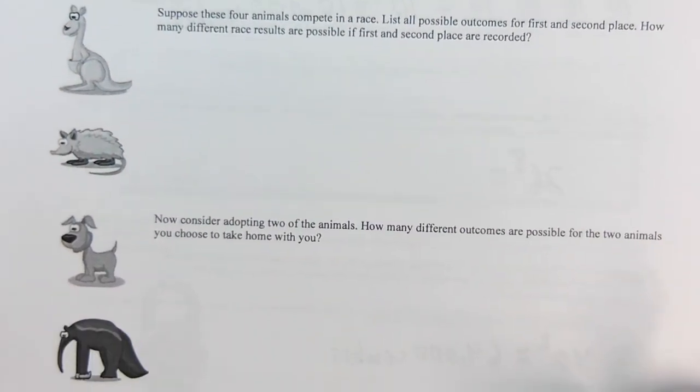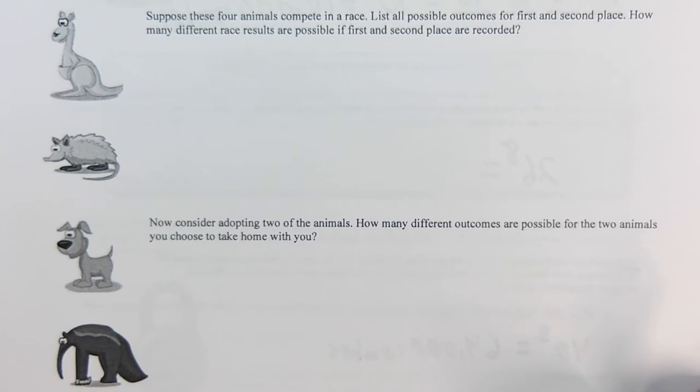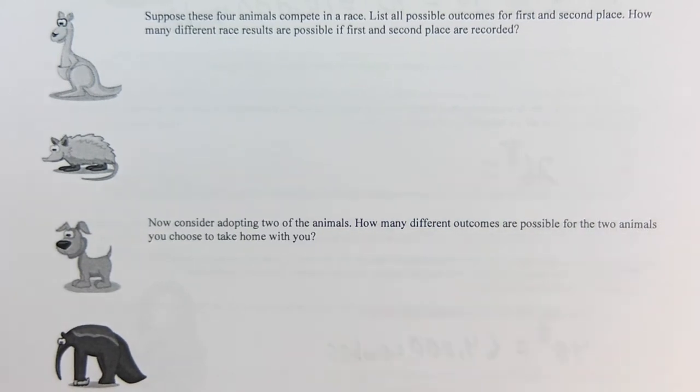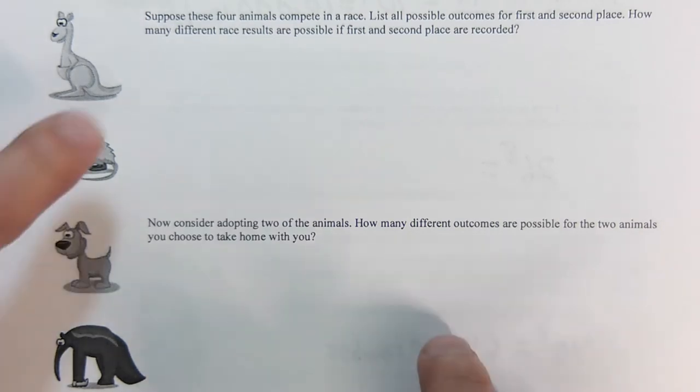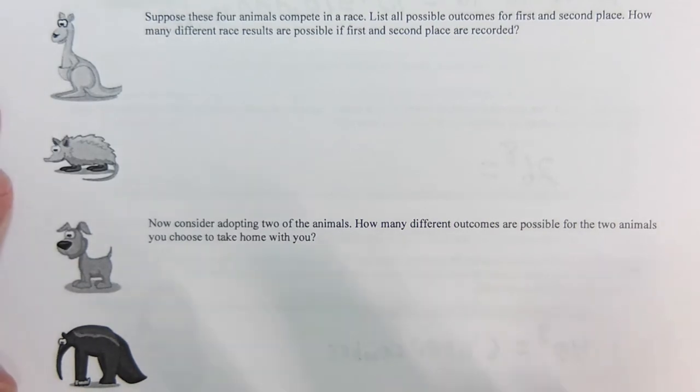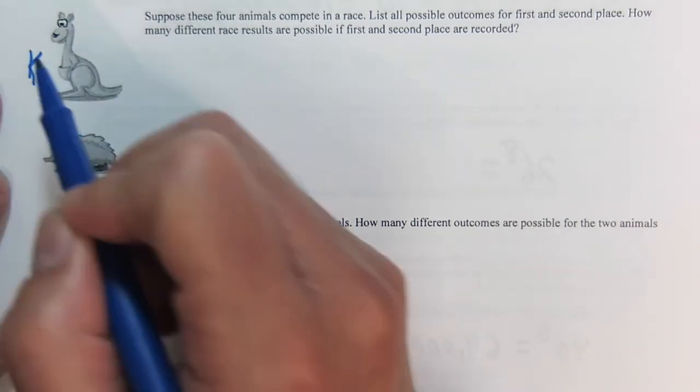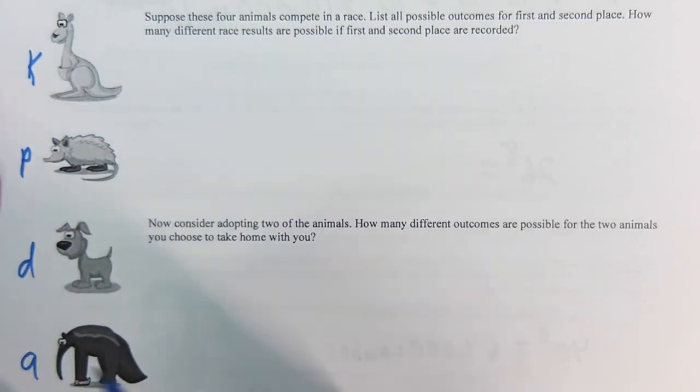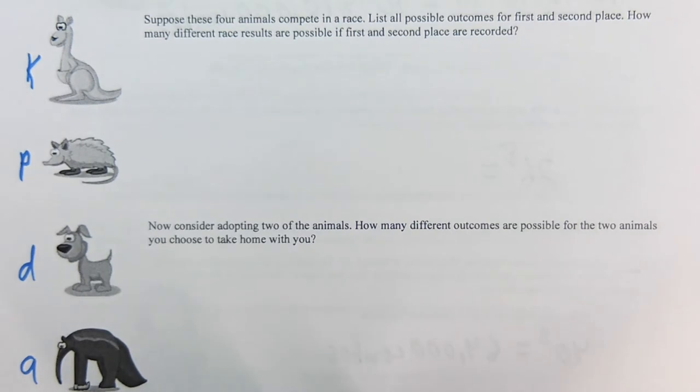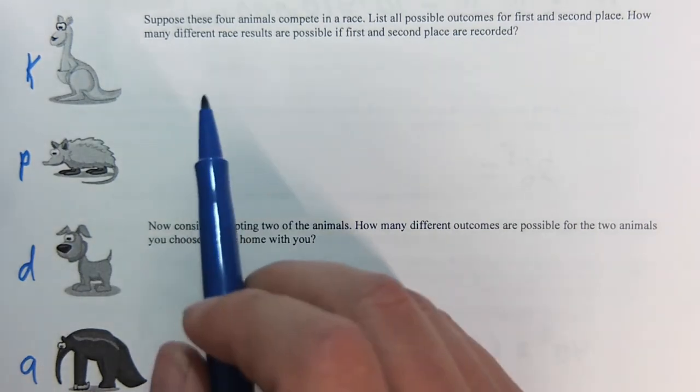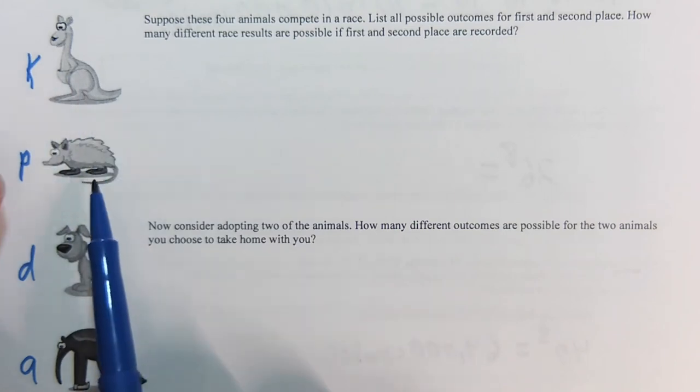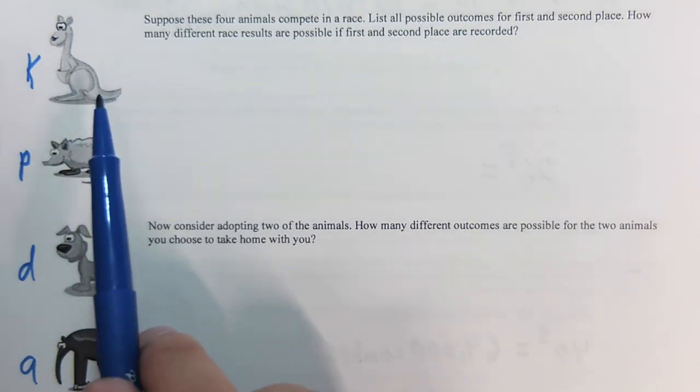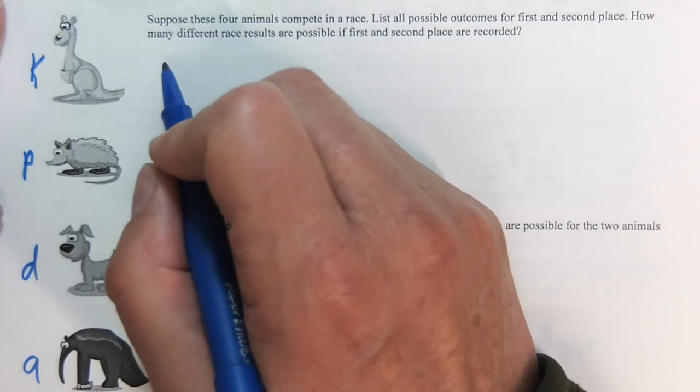Now we're going to get to the good stuff. We are going to have these four animals compete in a race. There's first place and second place. I'm going to call this one K for kangaroo, P for possum, D for dog, and A for anteater. We're going to list all of the possible first and second. In this case, if the kangaroo comes in first and the possum second, that's different than the possum coming in first and the kangaroo second. In this case, the order really matters. So I'm going to write these out.